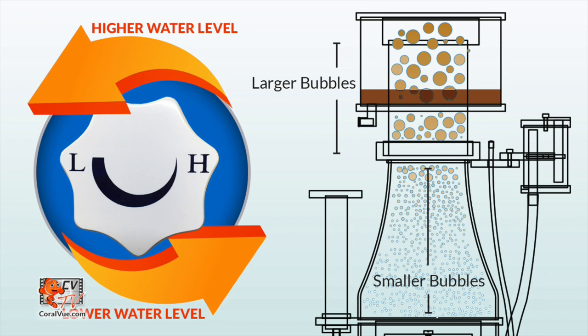Allow the skimmer to acclimate to the new setting for 24 hours before making any further adjustments. The more closed the output valve becomes, the wetter the waste collection becomes.